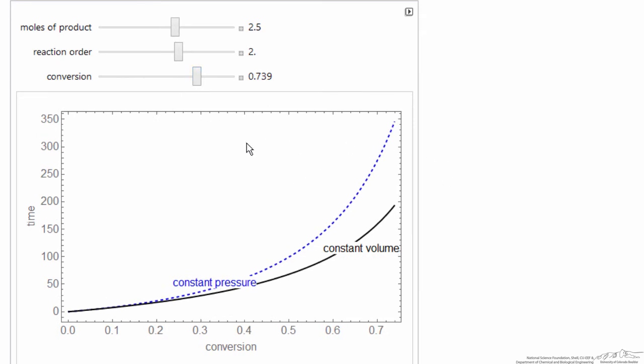So you can use this simulation to get a better idea of the difference between a constant pressure and a constant volume reactor. These are both isothermal batch reactors.